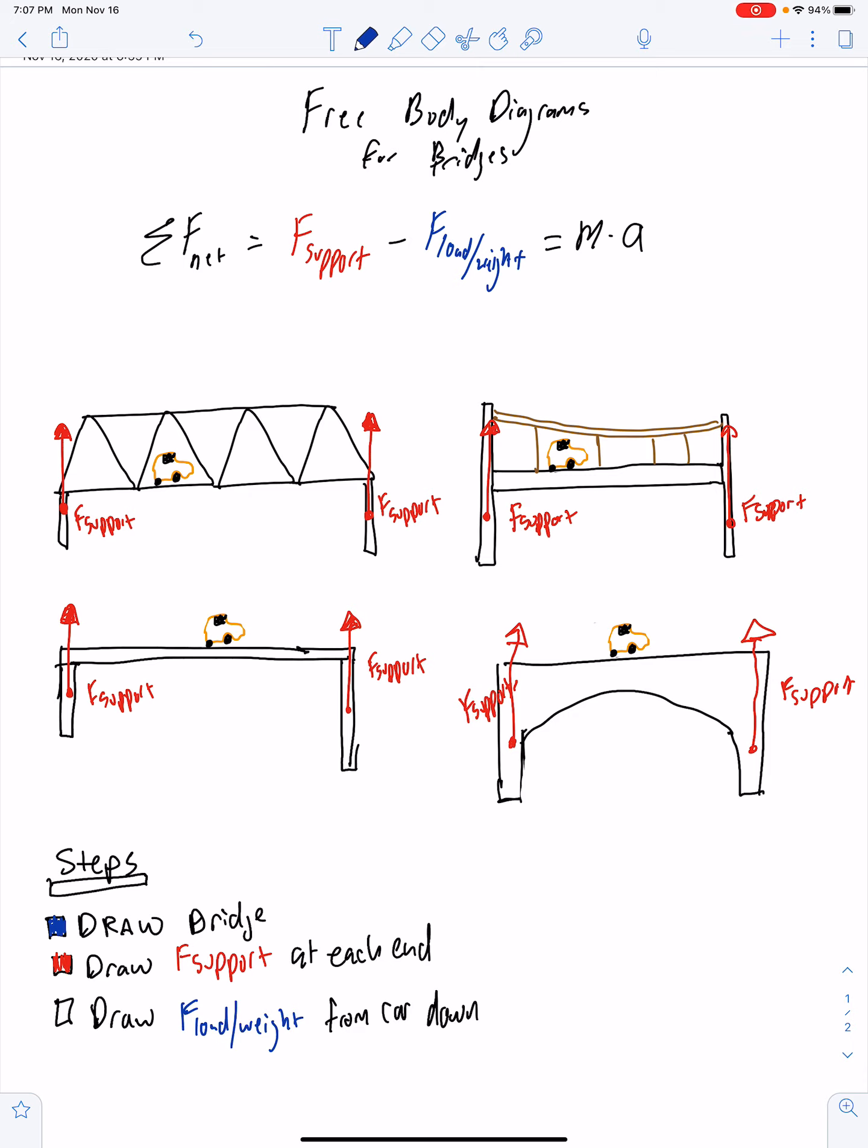We talk about dead loads and live loads. Dead loads mean the weight of the bridge, anything that's built into the bridge that's not going to move. Live loads are anything that's going to come and go on the bridge. So cars, pedestrians, pigeons, snow, those would all be live loads constantly changing.